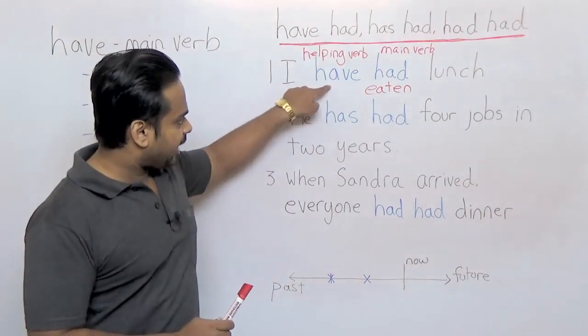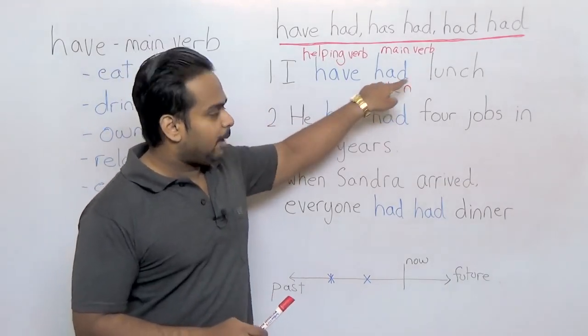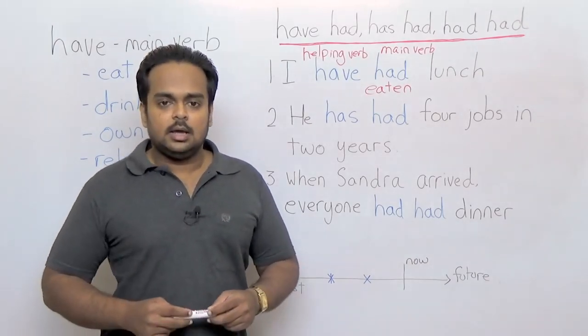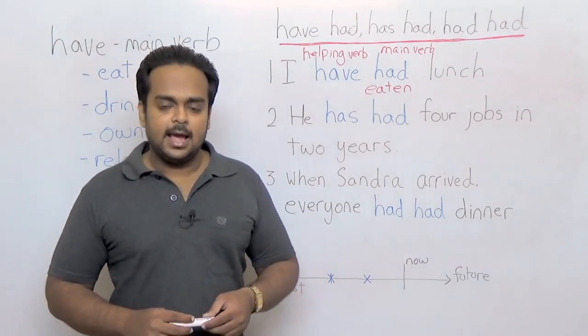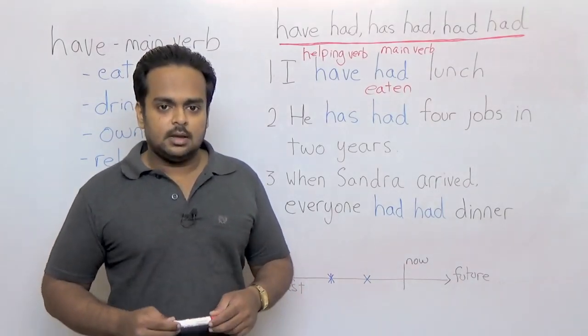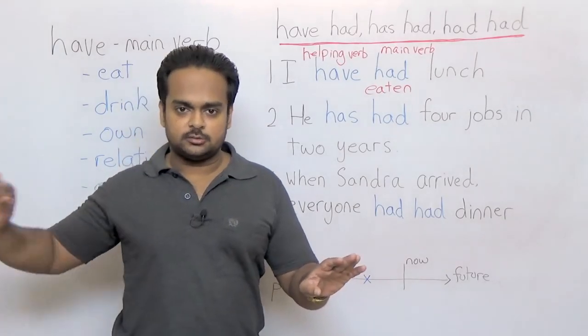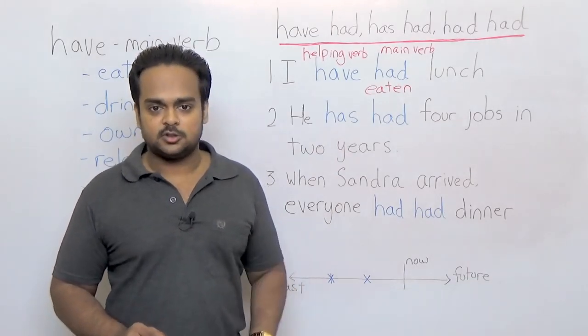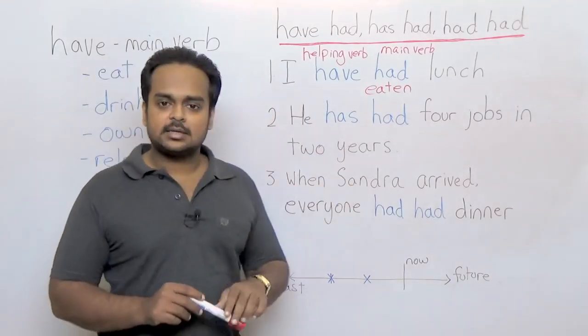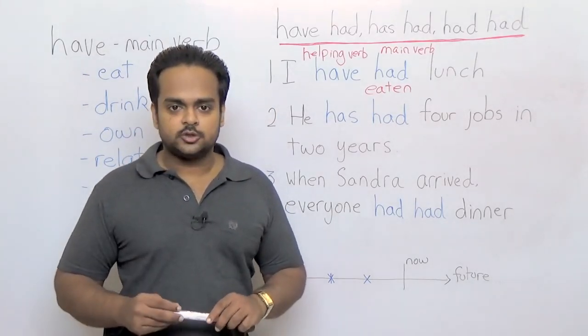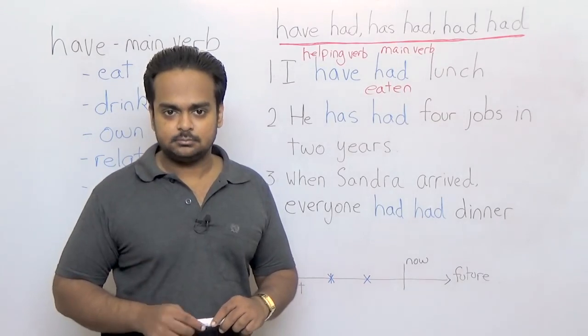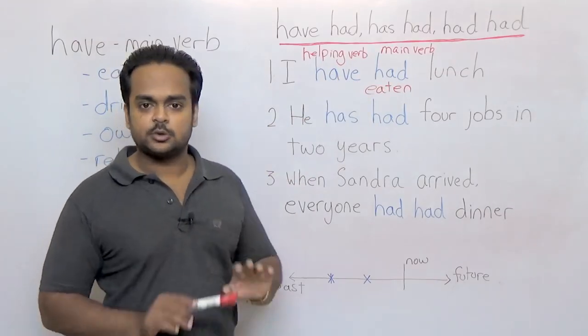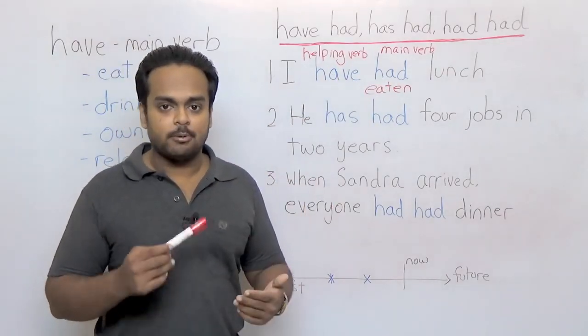But when we use this have, it shows that my eating lunch has some connection to the present. For example, if a friend comes to me and asks, hey do you want to have lunch with me? And I don't want to have lunch because my lunch is already finished. I would say, oh I have had lunch, thank you very much. So this have shows that I just ate lunch. So it shows some connection to the present. So you see, this have shows the tense and this had means eaten. So they're completely different functions or purposes.